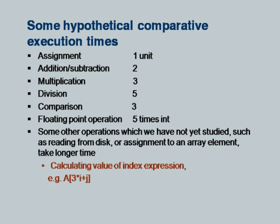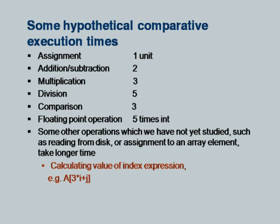We can also consider other operations such as reading from disk or assigning to an array element, which take longer time. For an array element like 'a[3*i + j] = something', computing the index itself takes longer depending on the multiplications and additions involved. A disk operation would be 1,000 to 10,000 times more costly and generally people do not take that into account when calculating the efficiency of an algorithm.